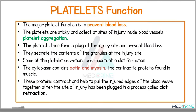The major platelet function is to prevent blood loss. Platelets are sticky and collect at the site of injury inside the blood vessels in a process called platelet aggregation. The platelets then form a plug at the injury site preventing blood loss, and they secrete the contents of their granules at the injury site — some of these secretions are important in clot formation. The platelet cytoplasm contains actin and myosin, which are contractile proteins also found in muscles. These proteins contract and help pull the injured edges of the blood vessel together after the site of injury has been plugged, in a process known as clot retraction.